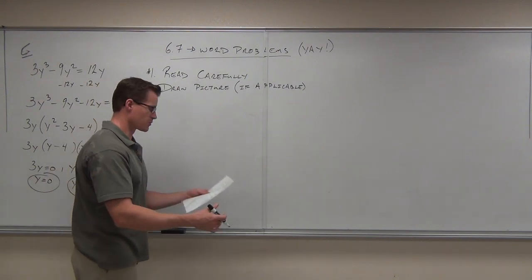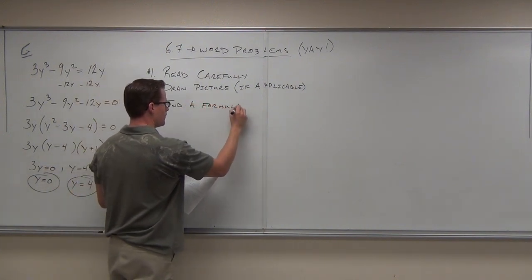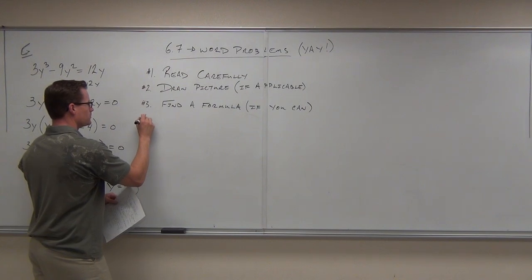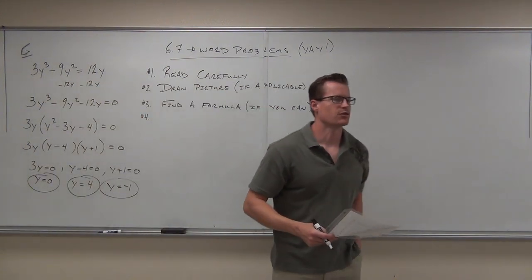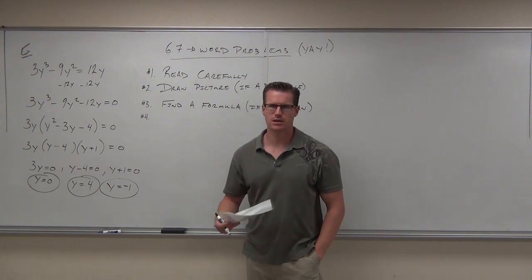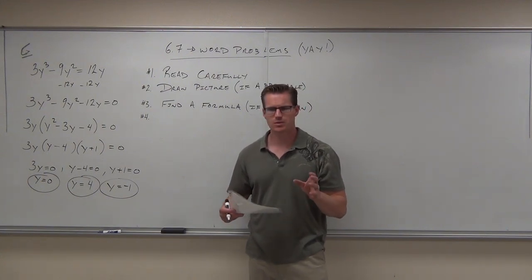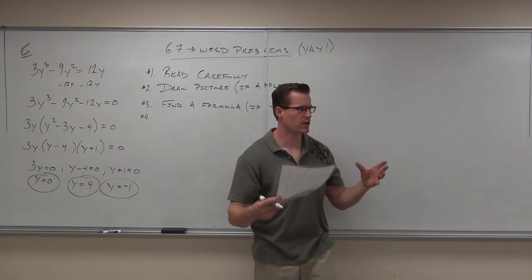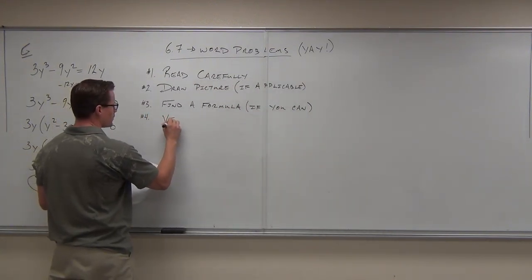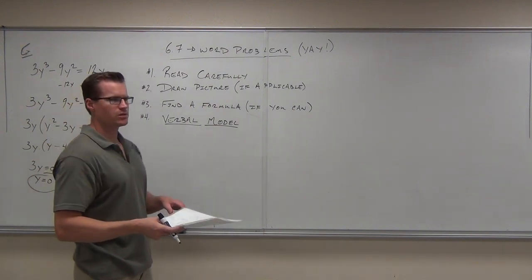Sometimes these word problems give you a formula that makes it nice. If not, they'll give you something that you can find a formula for. Number four — this is kind of an important one — number four is make what's called a verbal model. A verbal model is kind of a combination of a sentence and a math expression. It uses symbols like plus and minus, but it doesn't put any variables in there yet. It doesn't try to solve the problem yet. A verbal model just kind of organizes the thoughts of what's happening in the problem. Make a verbal model — like an equation, but with words.